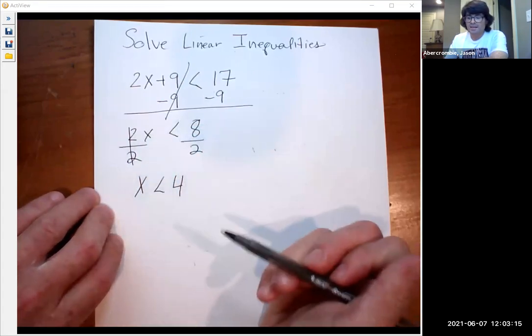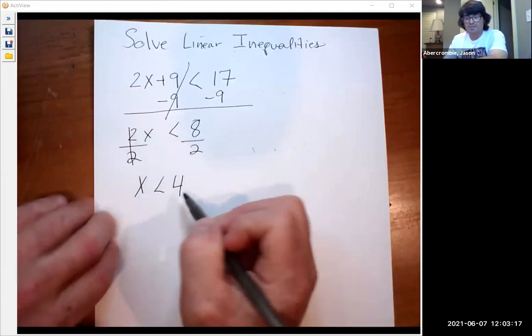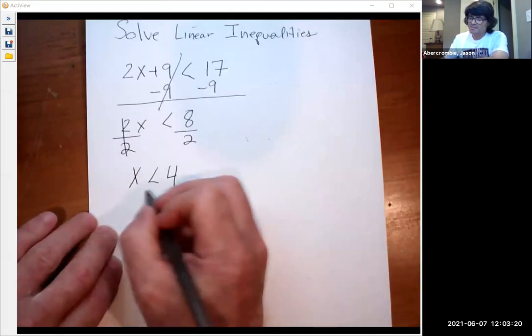If I multiply or divide by negative, you flip the sign the opposite way. But here we don't have to worry about that. x is less than 4.